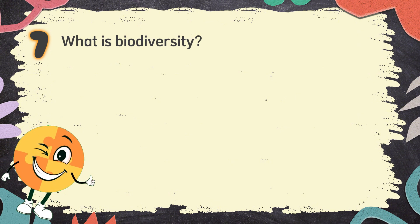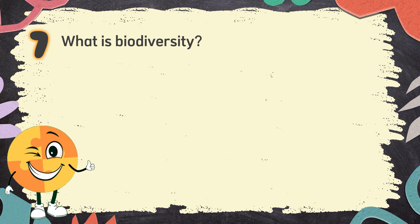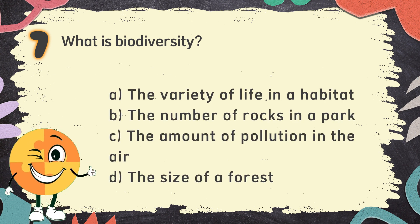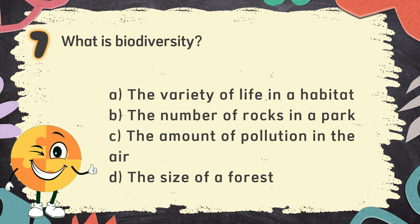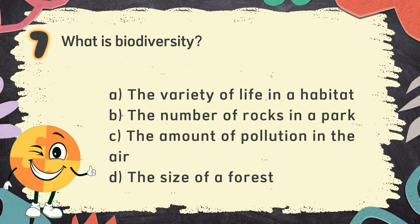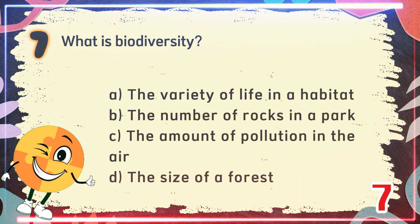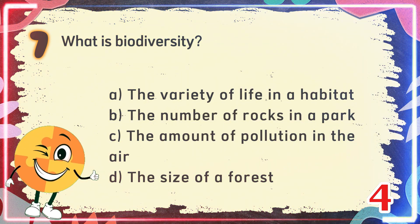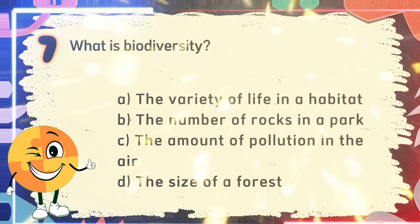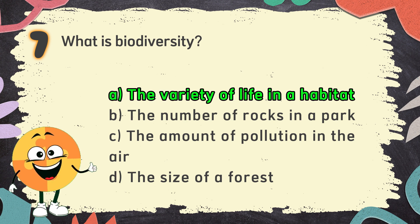Number 7. What is biodiversity? The choices are A. The variety of life in a habitat, B. The number of rocks in a park, C. The amount of pollution in the air, D. The size of a forest. The correct answer is A. The variety of life in a habitat.